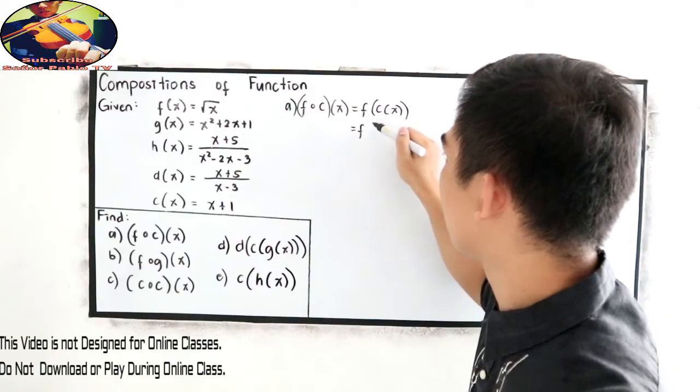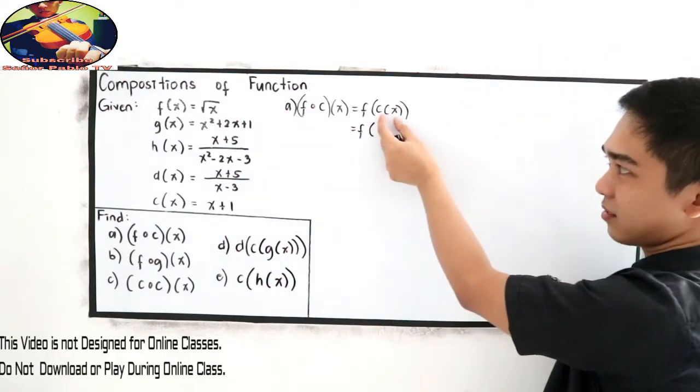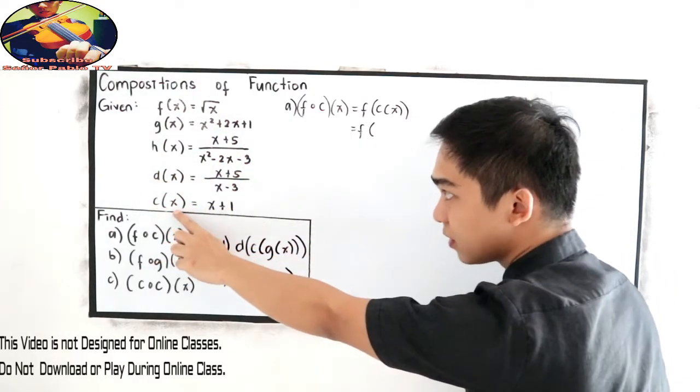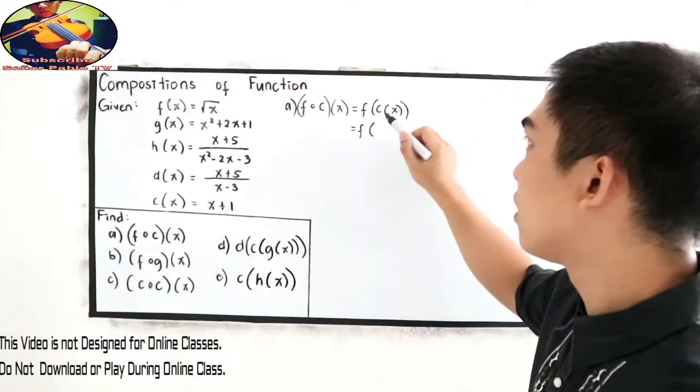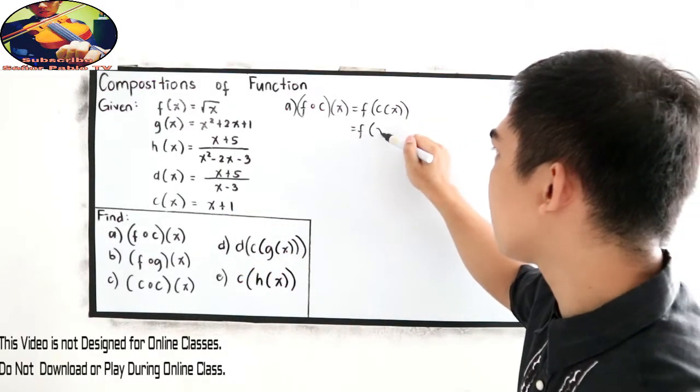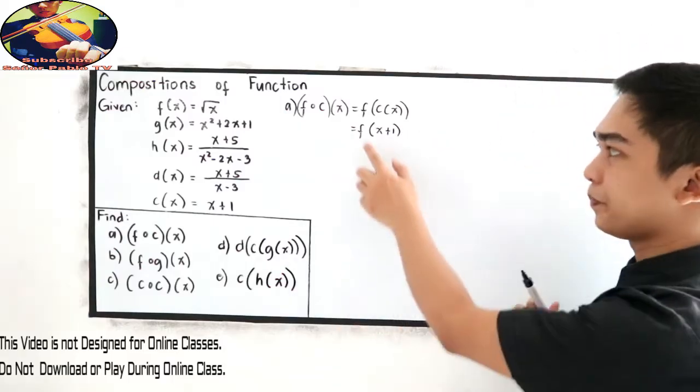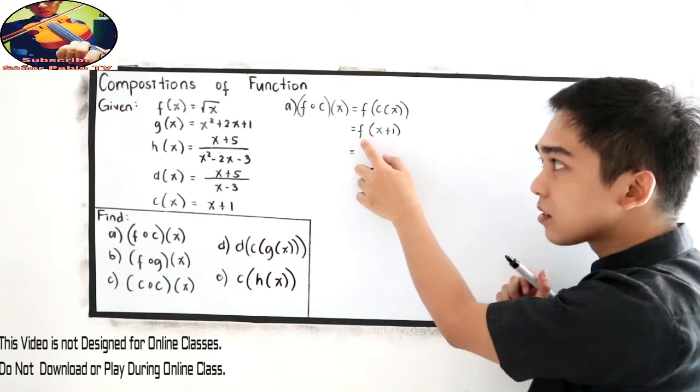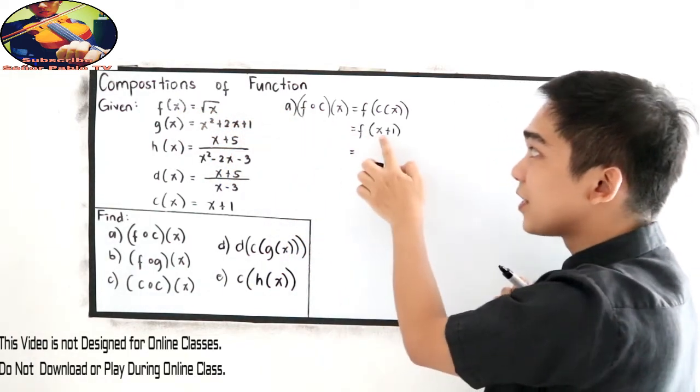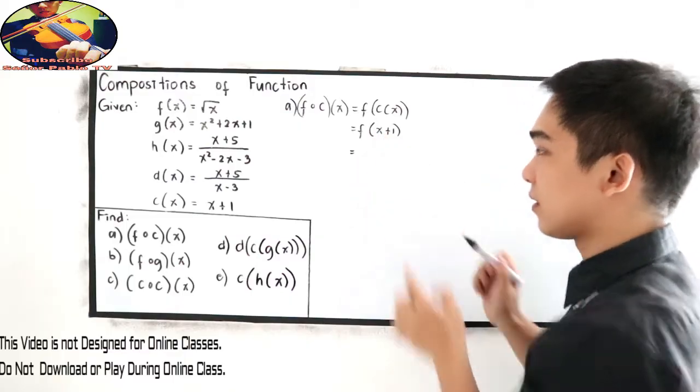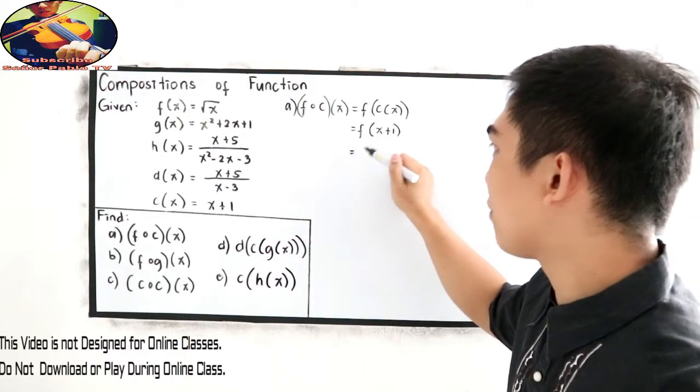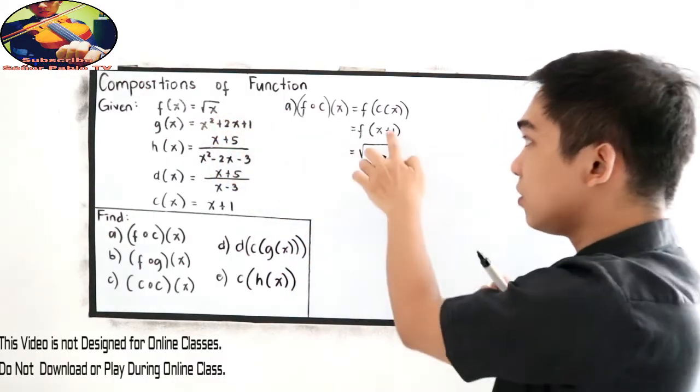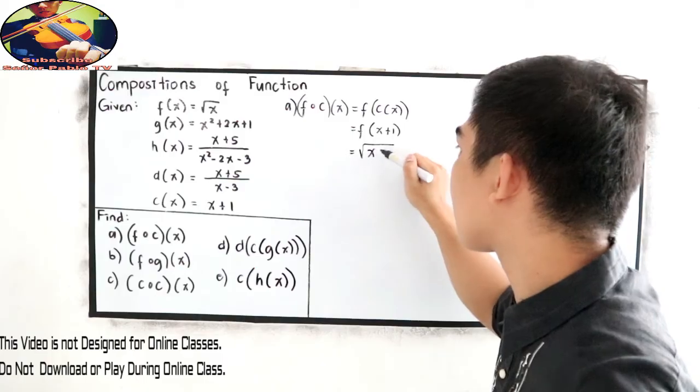So f, substitute c of x. c of x, find our given, c of x is here and its value is x plus 1. So change c of x to x plus 1. Next, from f of x, so this is our f of x, change x to x plus 1. So f of x is square root of x, so we are going to change x to x plus 1.